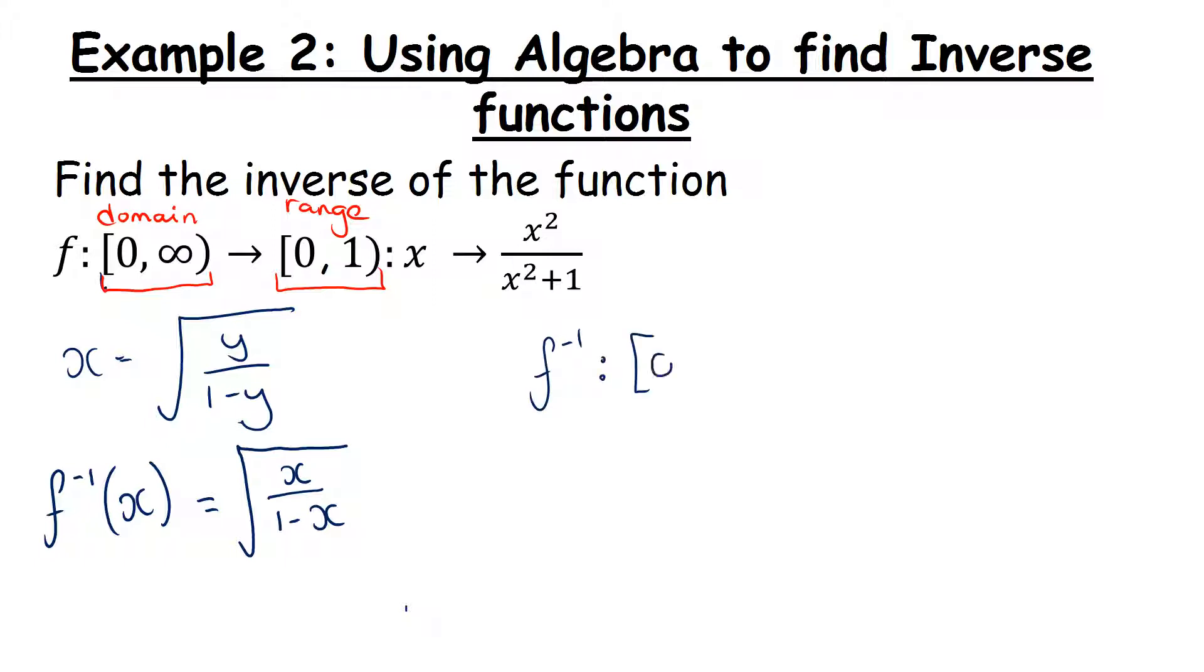So we have the inverse function. Notice how I'm putting in the range from the original and it's going to go to the domain of the original. They basically swapped places. In example one, all we were told was that x was an element of the real numbers. They didn't define any range for us, only a domain. Because of that, we didn't have to do anything with the domain and range. If you get a more complicated example where the domain and range are explicitly stated, this is how you would deal with them.